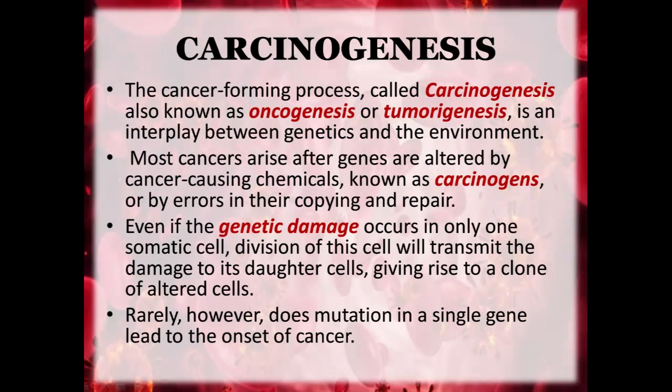Carcinogenesis. The cancer forming process called carcinogenesis, also known as oncogenesis or tumourogenesis, is an interplay between genetics and the environment. Most cancers arise after genes are altered by cancer causing chemicals known as carcinogens, or by errors in their copying and repair. Even if the genetic damage occurs in only one somatic cell, division of this cell will transmit the damage to daughter cells, giving rise to a clone of altered cells. Rarely does a mutation in a single gene lead to the onset of cancer. More typically, a series of mutations in multiple genes create a progressively more rapidly proliferating cell type that escapes normal growth restraints, creating an opportunity for additional mutation.